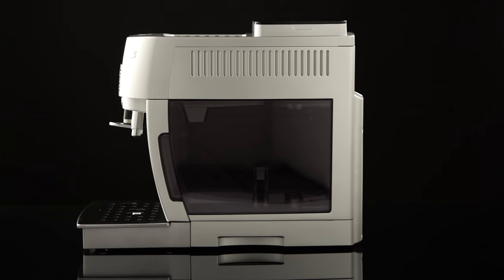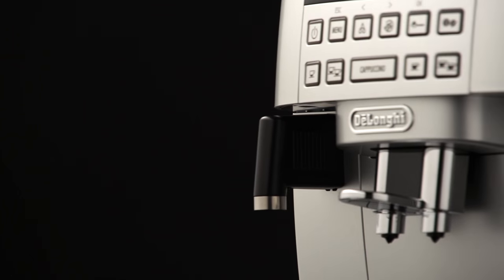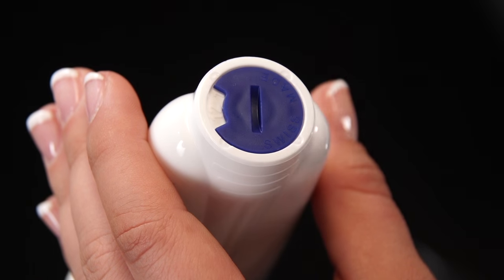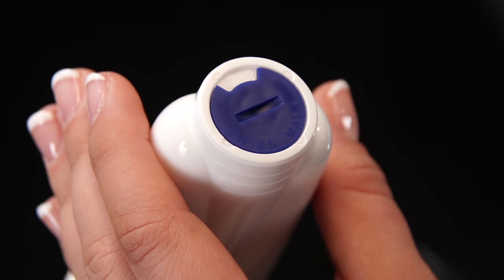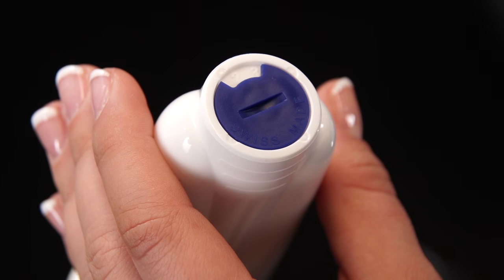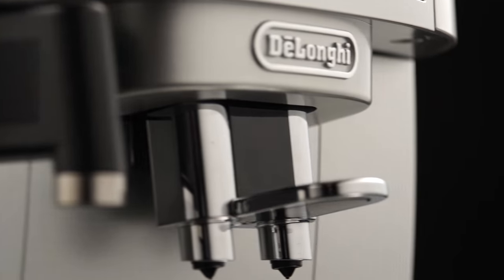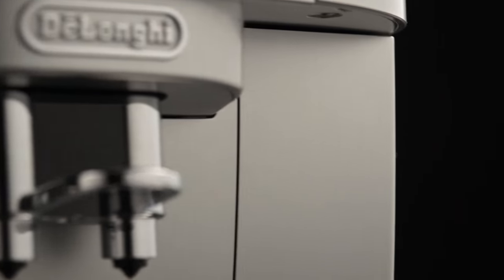Installing the filter. Remove the filter from the packaging. Turn the date indicator disc until the next two months of use are displayed. The filter lasts about two months if the appliance is used normally. If the coffee machine is left unused with the filter installed, it will last a maximum of three weeks.